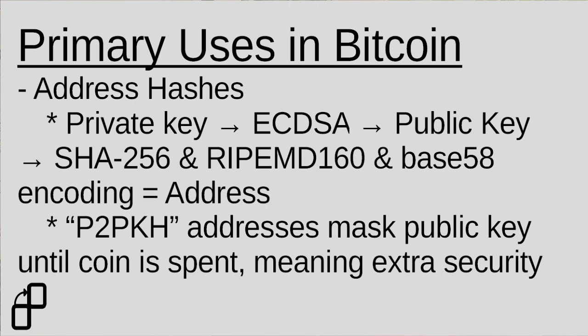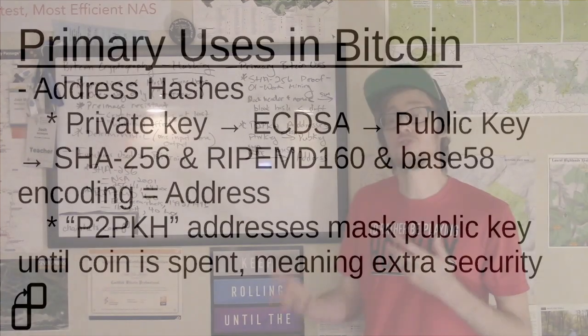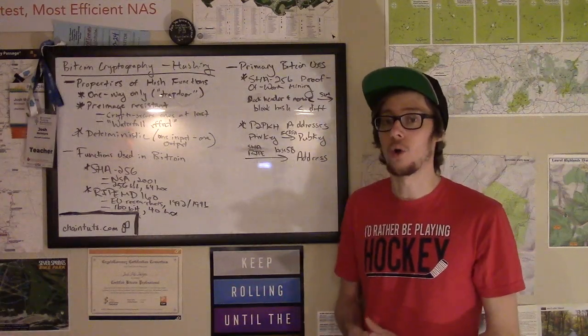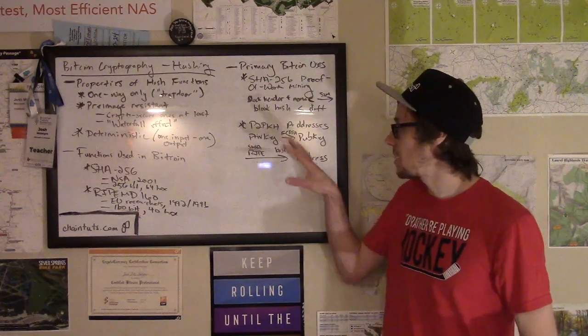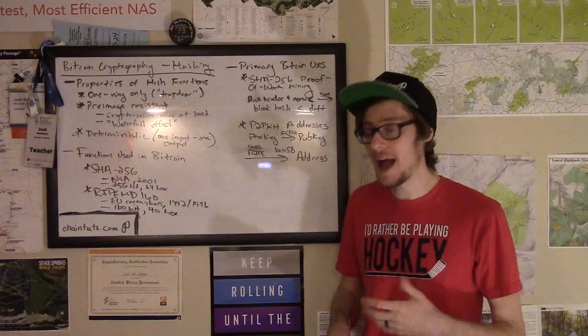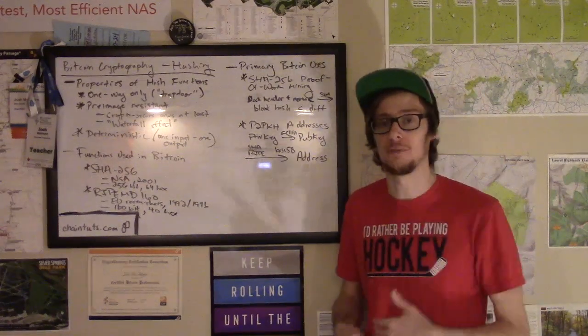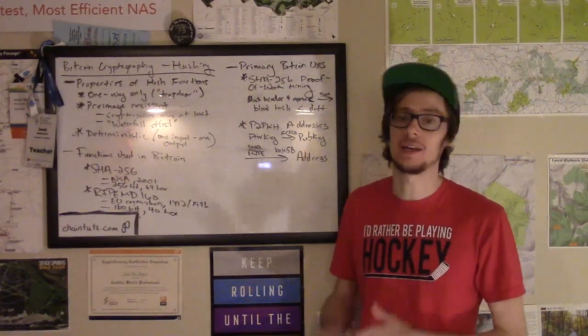So the most common Bitcoin address format takes the private key, runs it through the elliptic curve algorithm, gets you the public key, but then that public key is run through one round of SHA-256, one round of RIPEMD-160, and is then encoded in a format which is base 58 encoding, base 58 check for Bitcoin legacy addresses, or another format called cash address for Bitcoin cash addresses. But the underlying algorithm is the same. You're actually paying to a hash of the public key, hence pay to public key hash addresses.